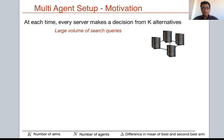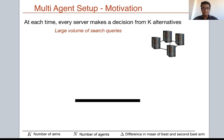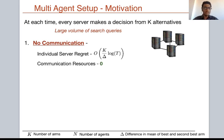To understand this more clearly, consider the regime of a large volume of search queries, so that at each time every server makes a decision and collects a stochastic reward. In such a scenario, one could imagine two baselines. One where there is no communication between servers: each server plays a multi-arm bandit problem by itself and thus each server incurs a regret of order K/δ · log T. In doing so, however, no communication resources are used because servers never talk to or coordinate with each other.